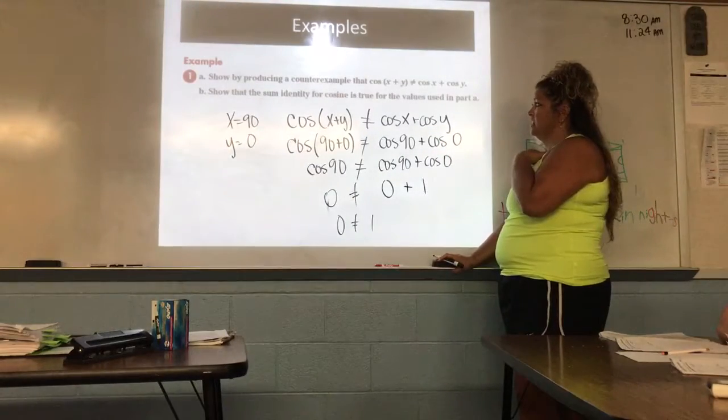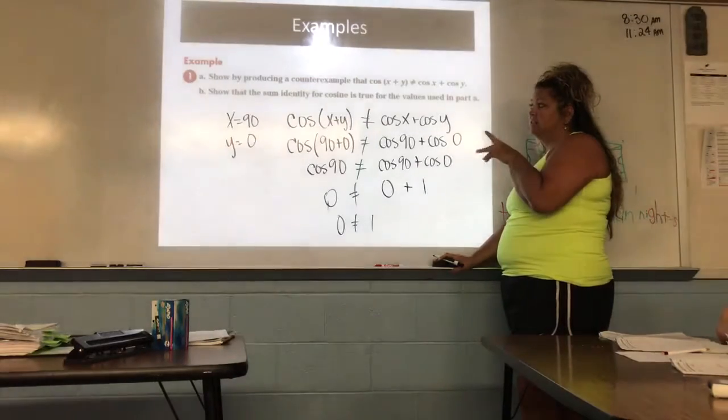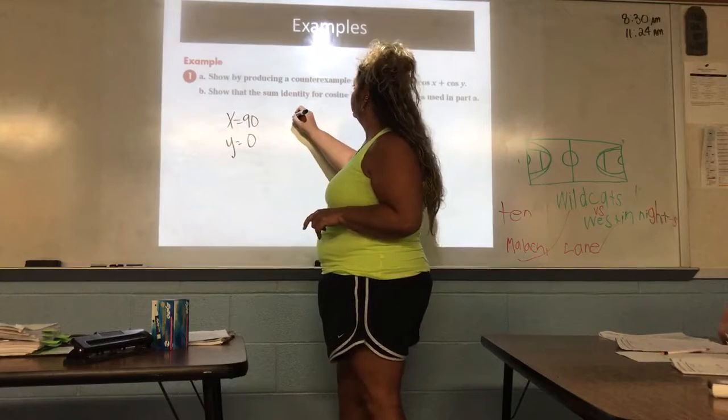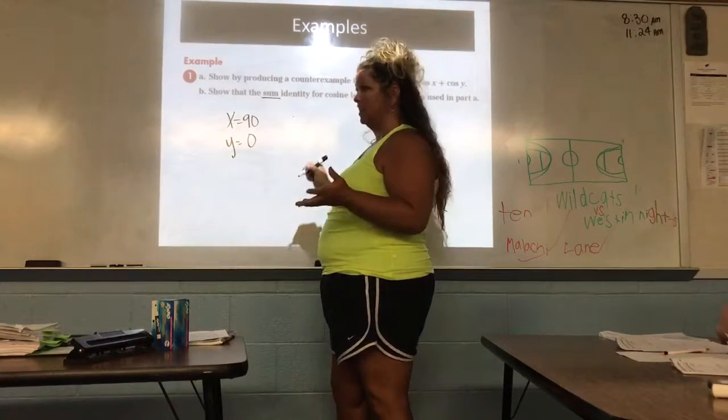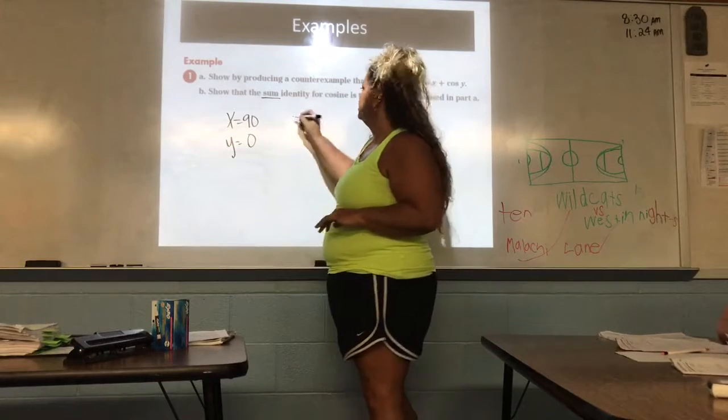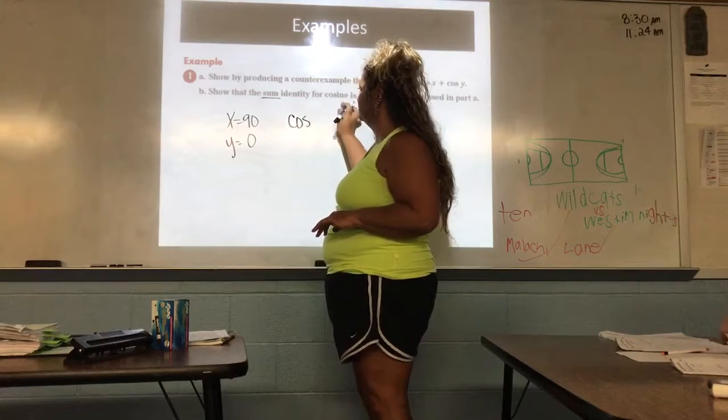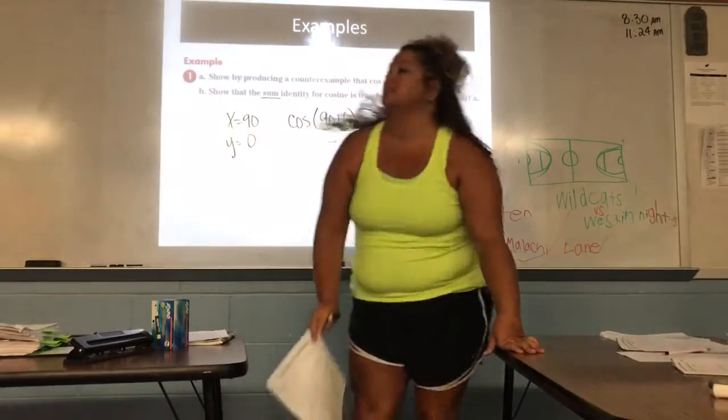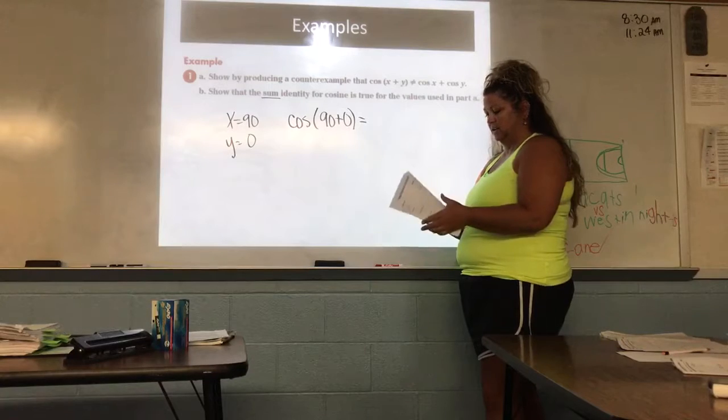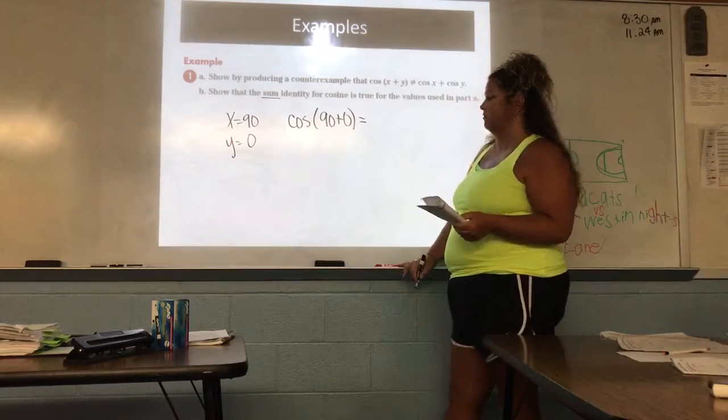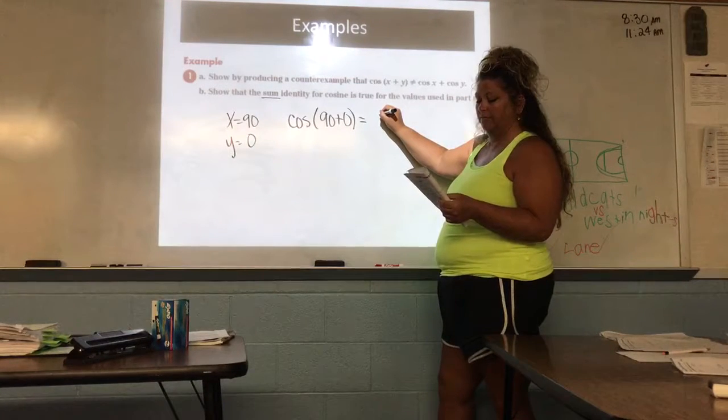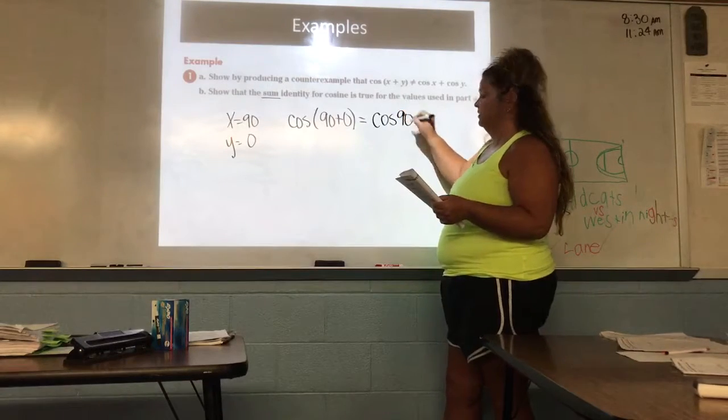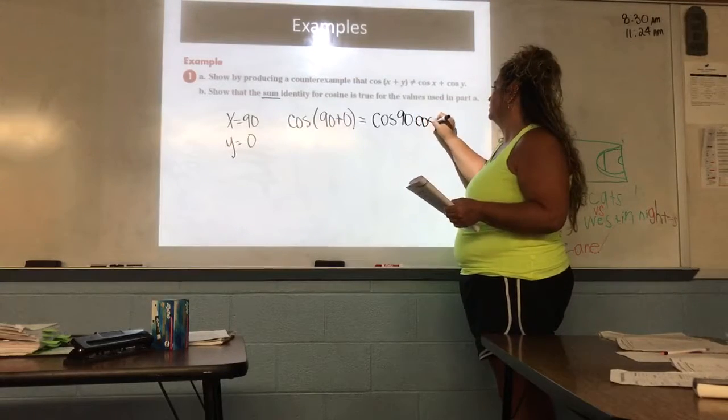Now it wants us to show that the sum identity for sine is true. So I'm going to leave my x is 90 and my y is 0. So using that, they want us to use the sum, which means addition. Do we all agree? Sum and difference. Sum is addition. Difference is subtraction. So I have cosine of 90 plus 0 is equivalent to. Now you're going to have to use your trig identity sheet. And somebody's going to tell me what to write for my sum and difference identity.